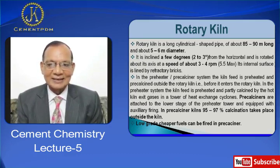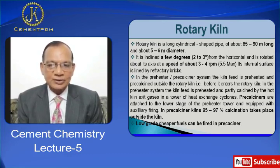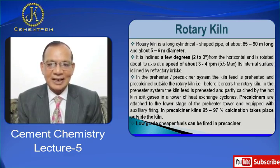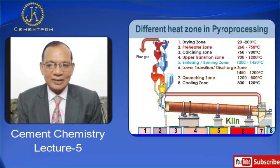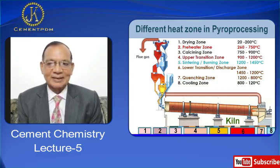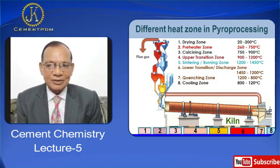Pre-calciners are attached to the lower stage of the pre-heater tower and equipped with auxiliary or secondary firing. In pre-calciner kilns, about 95 to 97 percent calcination takes place outside the kiln and only 3 to 5 percent calcination takes place inside the kiln. Low grade or alternate fuel can be fired in the pre-calciner. Now I would like to talk about the different zones in the rotary kiln attached with the pre-heater pre-calciner.